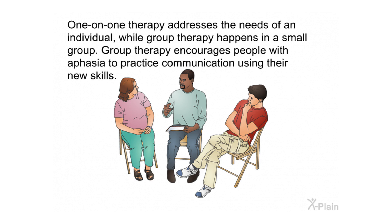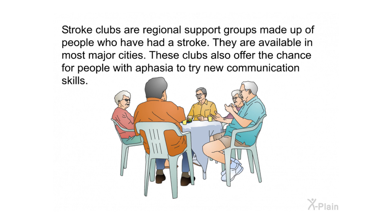One-on-one therapy addresses the needs of an individual, while group therapy happens in a small group and encourages people with aphasia to practice communication using their new skills. Stroke clubs are regional support groups made up of people who have had a stroke. They are available in most major cities and offer the chance for people with aphasia to try new communication skills.